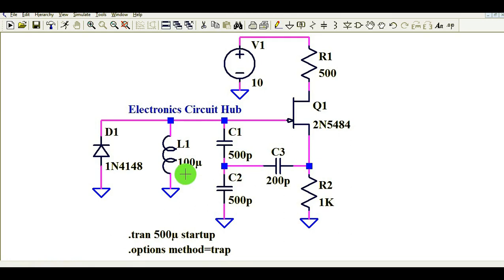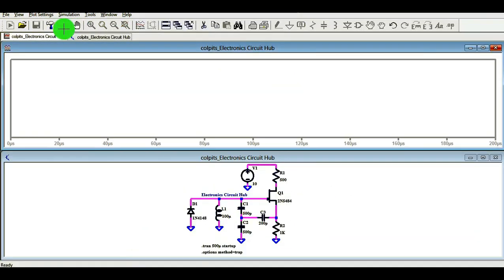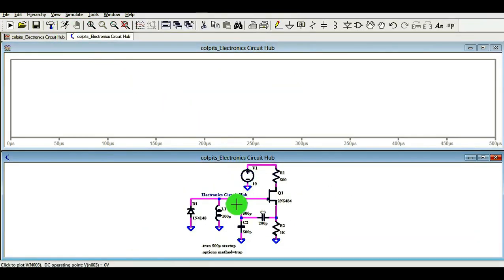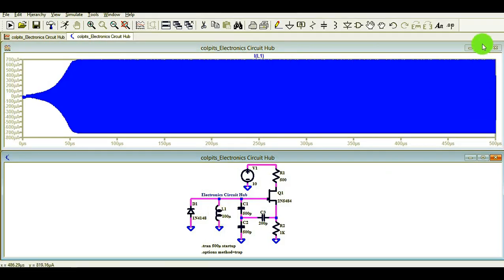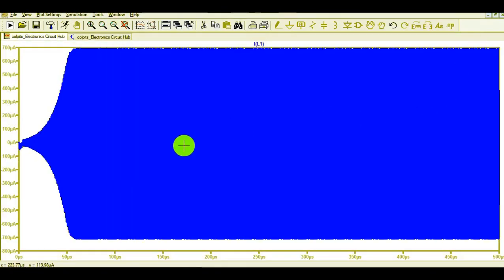That is how you can do some math and find the frequency value for this Colpitt's oscillator. Now I am going to run the simulation and show you the waveform, how this Colpitt oscillator ramps up and what is the frequency of this Colpitt oscillator. You can see here, I have run the simulation and I want to show you the current flowing initially.